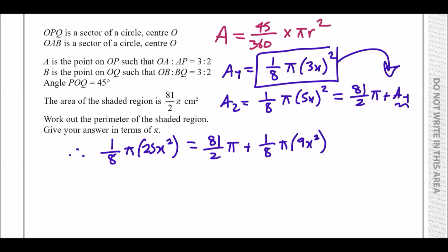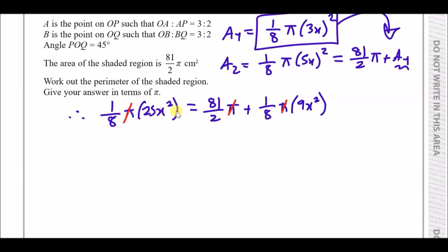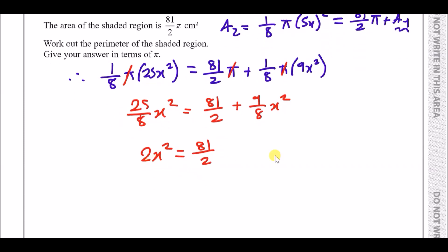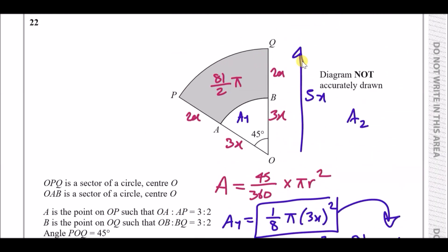Dividing through by pi, we get 25 over 8 times x squared equals 81 over 2 plus 9 over 8 times x squared. Moving x terms to the left: 25 over 8 minus 9 over 8 gives 16 over 8, which is 2x squared equals 81 over 2. Dividing by 2 and taking the square root gives x equals 9 over 2, which is 4.5.